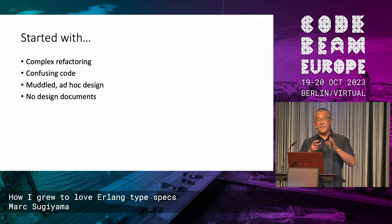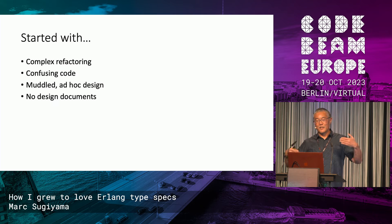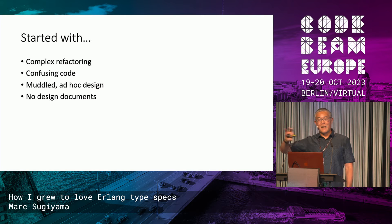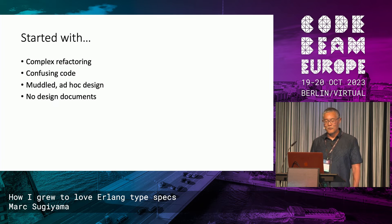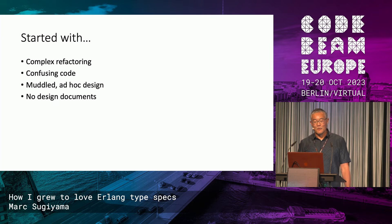It had to do with a state machine that sat between a database engine and a database client. There was this unfortunate syncopation of how the data was being moved, which required the state machine to represent what was happening on the client side, but then some other kind of statefulness for how to manage what was happening on the server side. The code was extraordinarily confusing. There was no real design to it, nothing was written down, no documentation, almost no comments — and the comments that were there were actually kind of misleading.